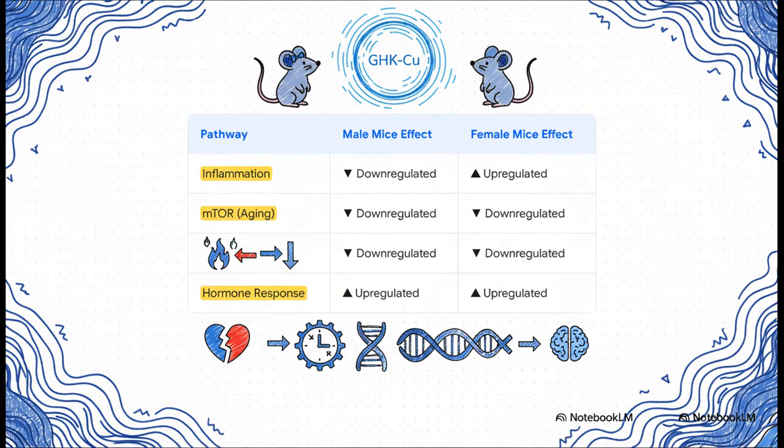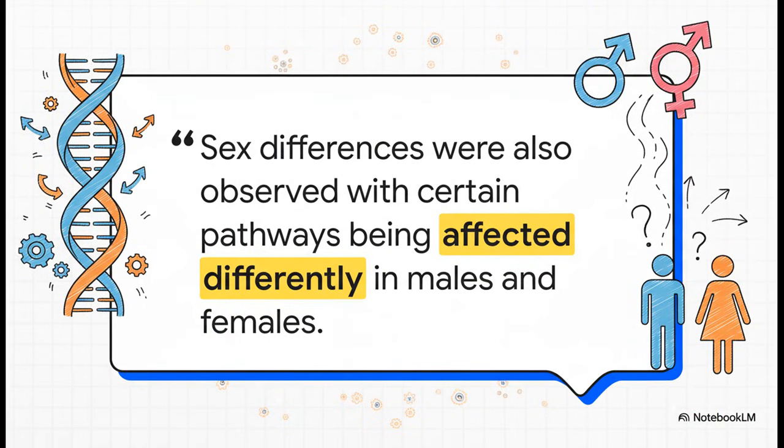This table really lays out how complex this is. You can see that wild difference in inflammation. But then look at mTOR, a huge aging pathway. It was turned down in both, which is what you want to see for anti-aging. And DNA repair was down in both. Then hormone response was turned up in both. It's a real mixed bag of signals. And look, you don't have to take my word for it. The lead author of the study, Manuela Rosenfeld, said it very clearly. The effects of GHK-Cu are not one size fits all. The sex of the subject can dramatically change how the body responds.